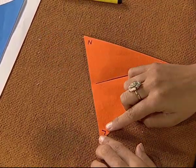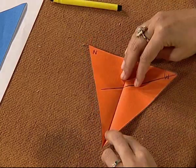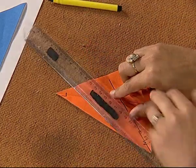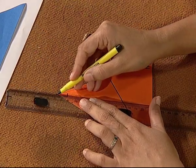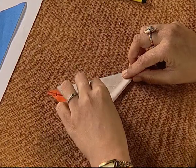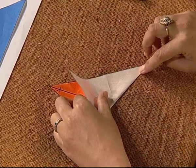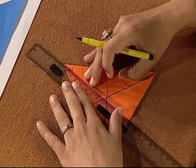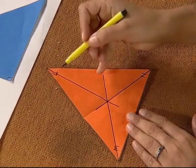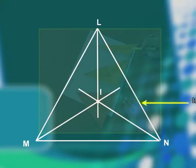Similarly, we get the bisector of angle L by folding the paper so that sides LN and LM coincide, then unfold and draw the bisector of angle L on the crease. Then we get the bisector of angle N by folding so that sides LN and MN coincide, unfold and draw the bisector of angle N. We observe that the bisectors of angles L, M and N all meet at a common point, which is called the incenter.